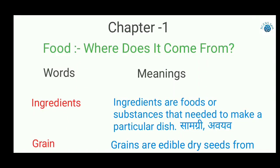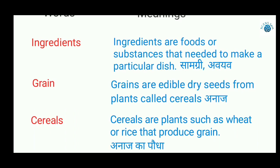This video is about word meanings and keywords of Class 6 Chapter 1: Food, Where Does It Come From. Let's start. Ingredients means substances that are needed to make a particular dish. For example, if you want to make boiled rice, the ingredients are rice and water. In Hindi, we call it samagiri or avya.